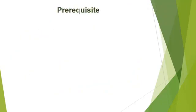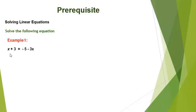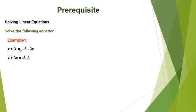At the beginning of this period, let us remember how we can solve a linear equation. Example 1: x plus 3 equals minus 5 minus 3x. We take all x's to the left side and all numbers to the right side. The equation becomes x plus 3x equals minus 5 minus 3. x plus 3x equals 4x, minus 5 minus 3 equals minus 8, then x equals minus 8 over 4, so x equals minus 2.